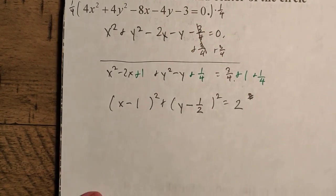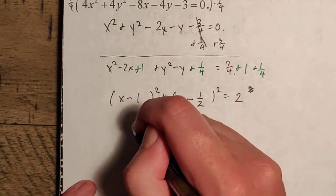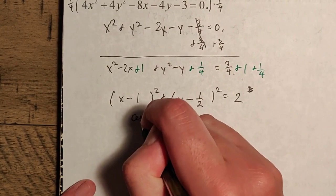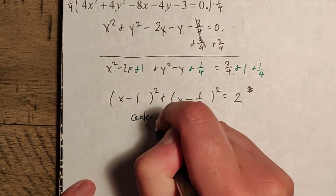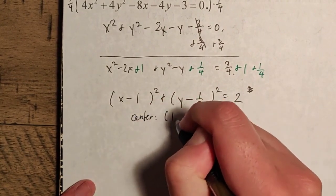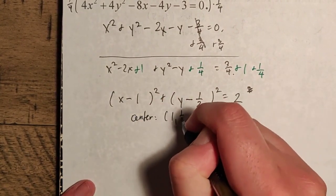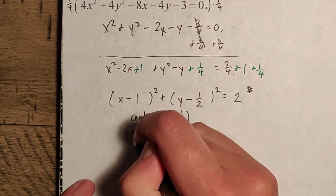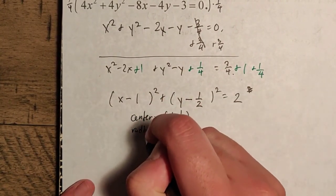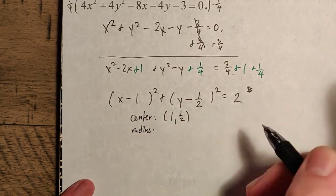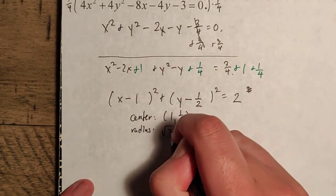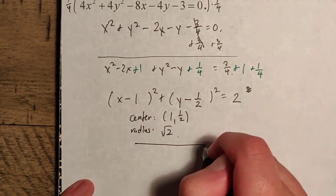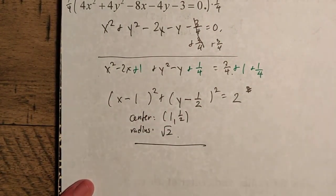So now the center is pretty easy to read: the center is going to be (1, 1/2). And the radius — remember, the right-hand side is the radius squared, not the radius itself — the radius is just radical 2.